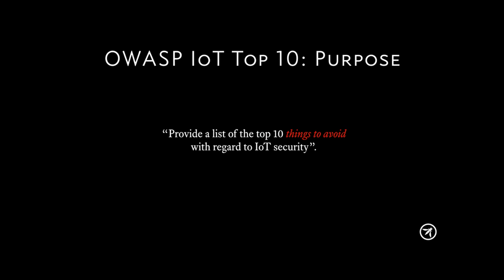The purpose for the IoT Top 10 is basically the 10 worst things that you should avoid. It's not specifically vulnerabilities or threats or risks, because you could talk for hours about what the differences are between those. So the idea here is just: these are bad things. Don't do these things.